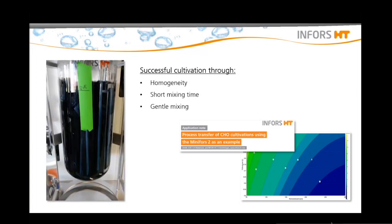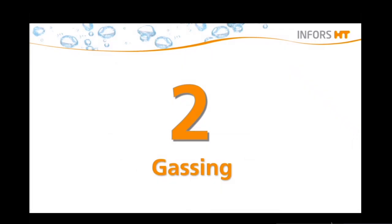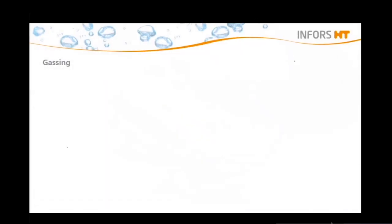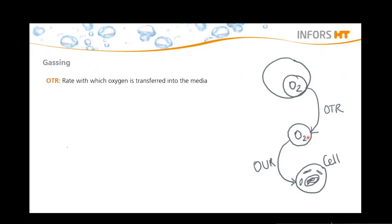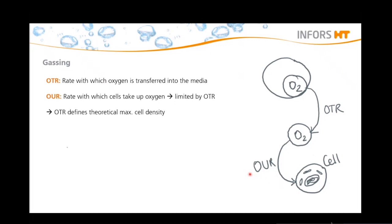The second factor that you need to consider is the oxygen transfer rate. During aeration, the gas bubbles come out of the sparger into the media and then the oxygen molecules are dissolved in the media, and then the molecules can be taken up by the cells. The so-called OTR, oxygen transfer rate, defines the rate of how fast the oxygen is transferred into the media. The OUR, the oxygen uptake rate, describes the rate at which the cells can take up the oxygen in the media. Therefore, the OTR defines the theoretical maximum cell density, since only the oxygen that is dissolved in the media can be taken up by the cells.